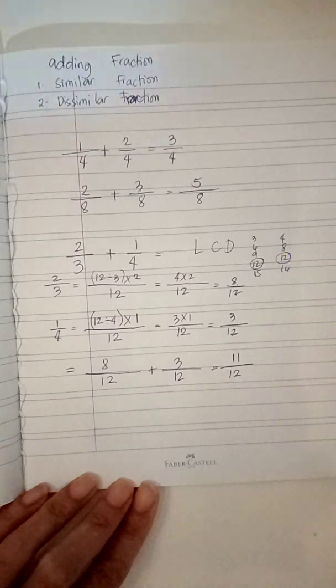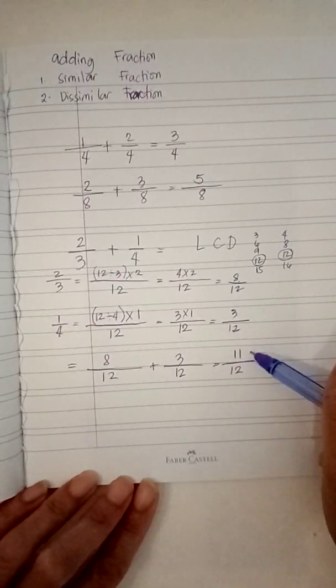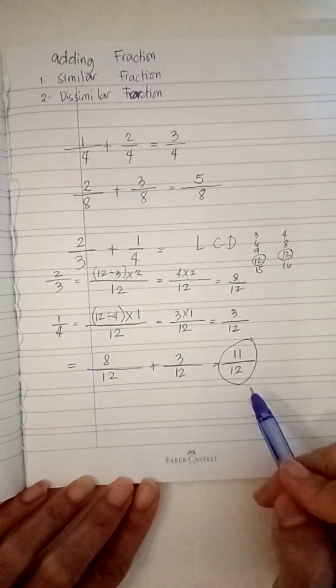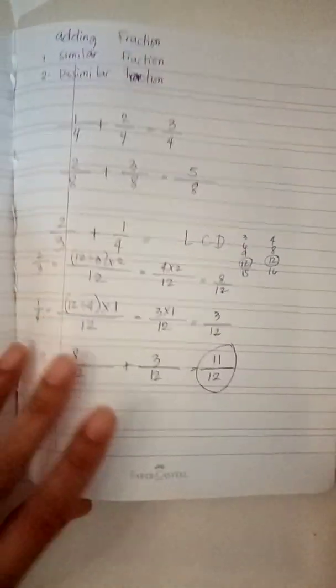But in this case, you cannot. So the answer is eleven over twelve. Okay, the next one.